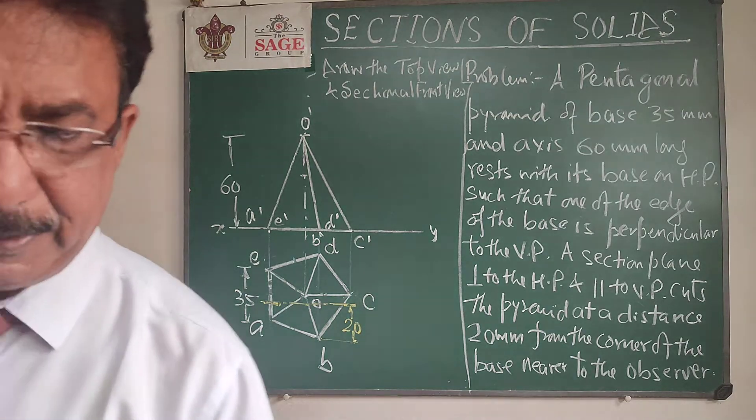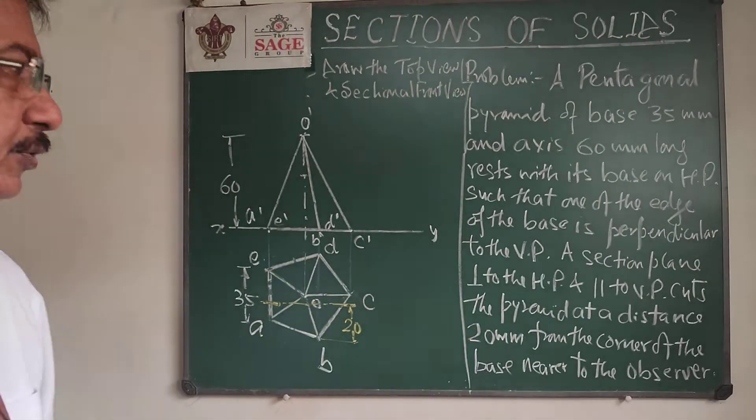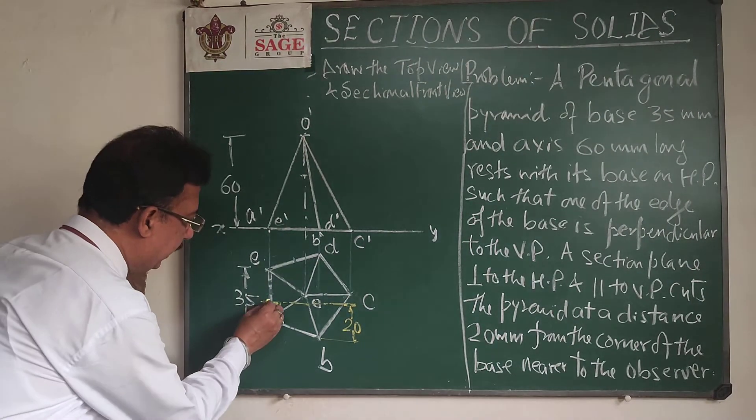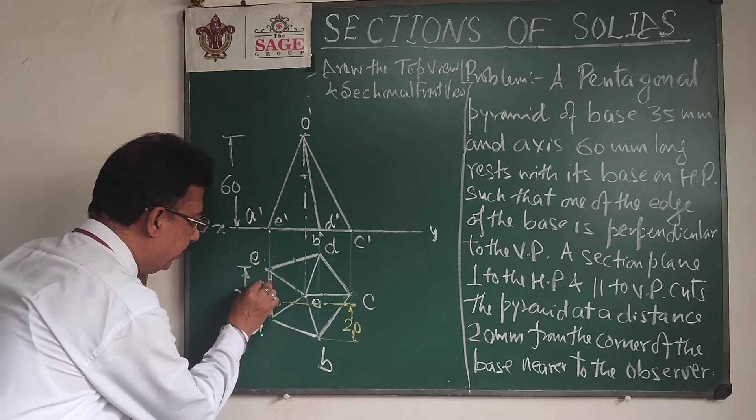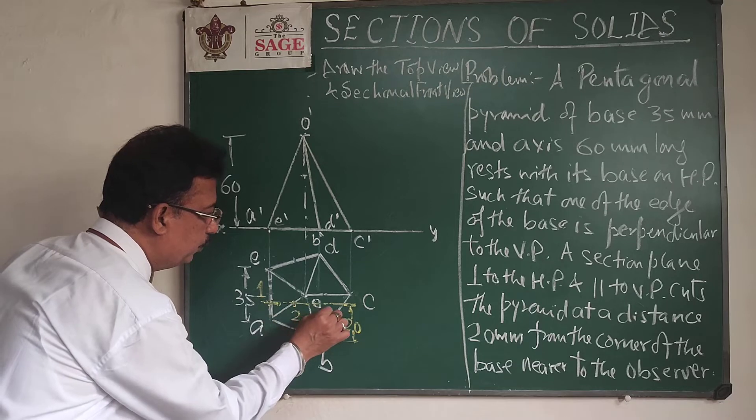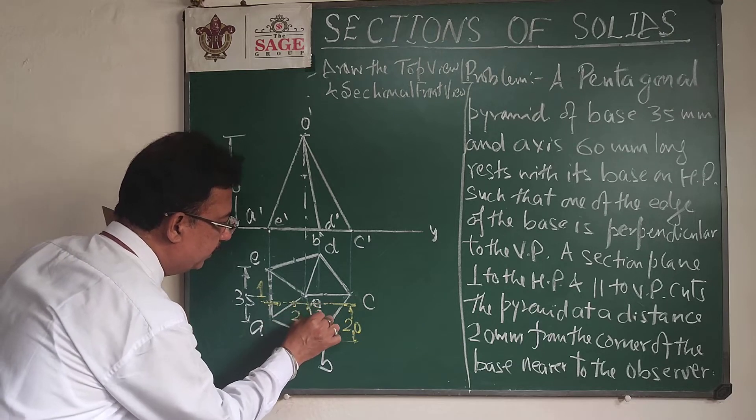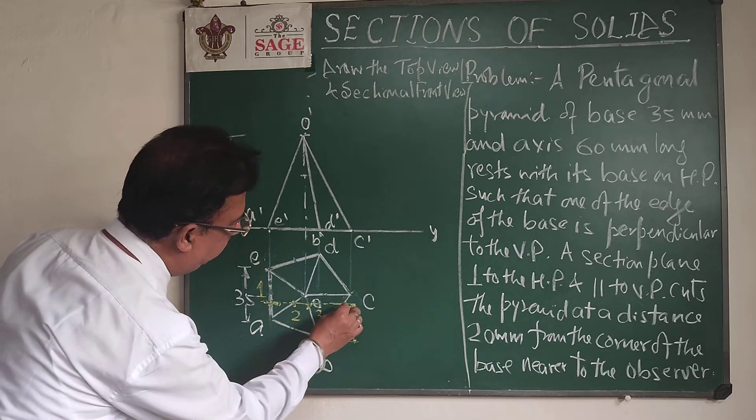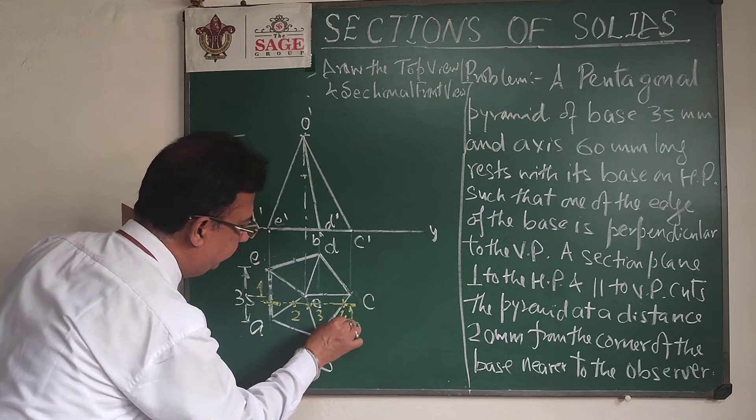So now the solid will be cut by this plane. As you see that this plane will be cutting the edges, this is the point 1, then the second edge that is point 2, this is the third edge that is point 3 and finally this is the point 4.